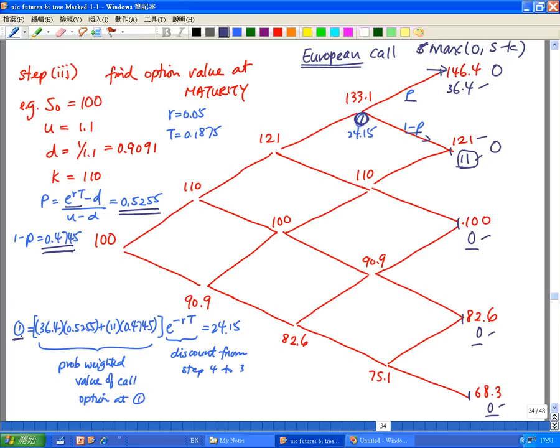I'm doing a weighted by probability average of my ending price. So here I have 36.4, which is my value here. If the stock price is 146.4 and my option value is 36.4, the probability of that is 0.5255. So that's my P.